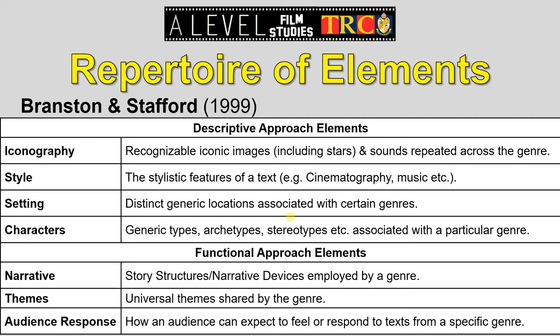First: iconography — things in the movie that are significant and represent other things. It could be your mise-en-scène elements: your props, your costumes, your locations, your acting styles, your lighting, your colour schemes, all that kind of stuff. But it can also be things that are loaded with symbolism. In a western, a sheriff's badge is not just a piece of costume — it says something about that character. It represents certain values.